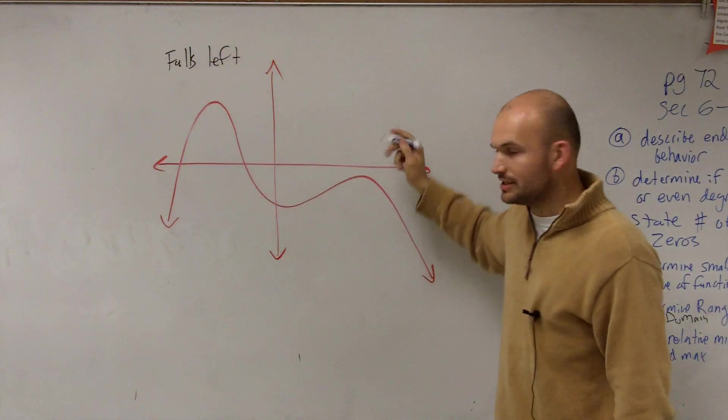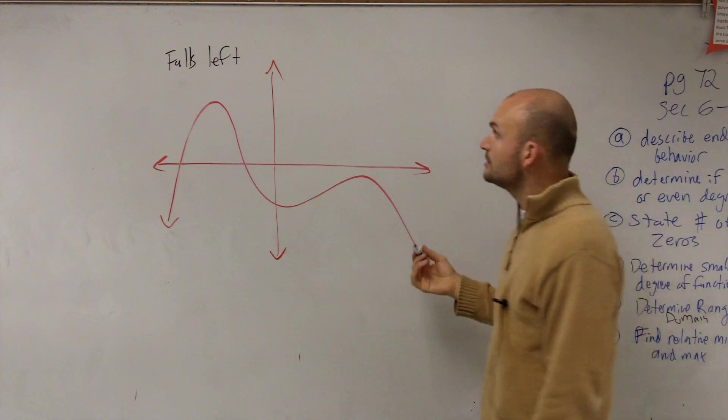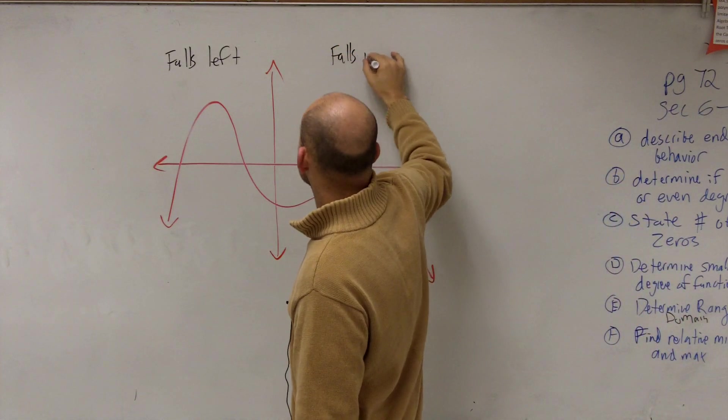Then, as we're going to the right, you can see that the graph is also going down. So we can say the graph falls right.